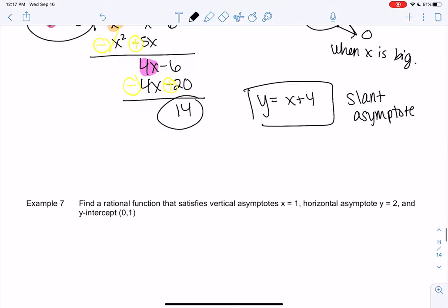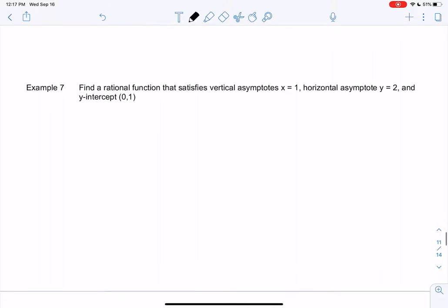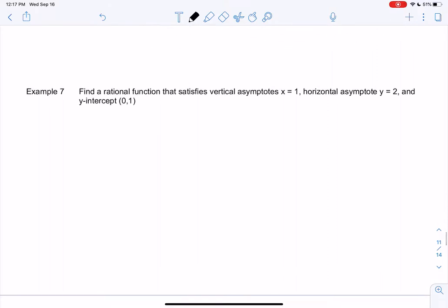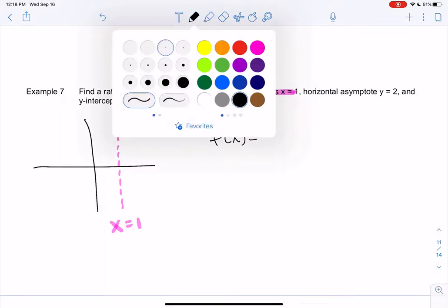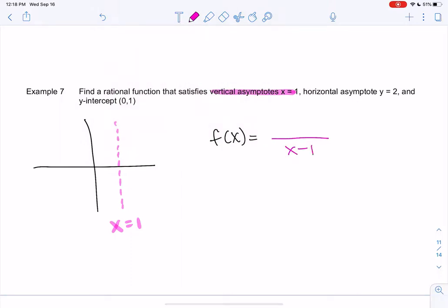Let's find a rational function that satisfies these conditions. I'm going to sketch it and write out information as I go. Vertical asymptote at x equals 1. Vertical asymptotes are the denominator, so that means I probably have an x minus 1 in the denominator.